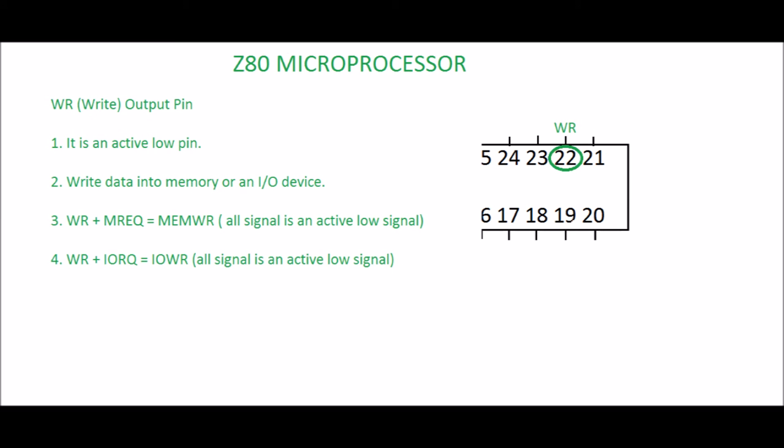Pin 22: WR, Write. It is an output pin and an active low pin. It writes data into memory or an I/O device — when this pin is active low, the microprocessor has already placed a data byte on the data bus and is ready to write. WR + MREQ = MEMWR: when write signal is combined with memory request, it is used to write into memory. WR + IORQ = IOWR: when write signal is combined with I/O request, it is used to write to an I/O device. All signals are active low.